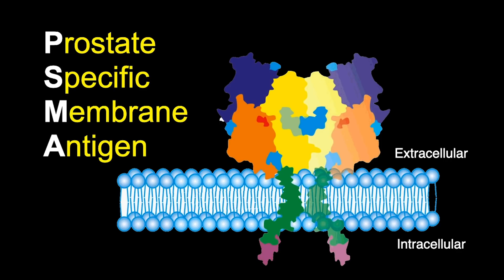PSMA stands for prostate specific membrane antigen. It is a protein that lives on the membrane of prostate cancer cells and is overexpressed in prostate cancer compared to other tissues in the body. By targeting this protein we can actually see where prostate cancer membranes are and localize prostate cancer metastases fairly accurately.